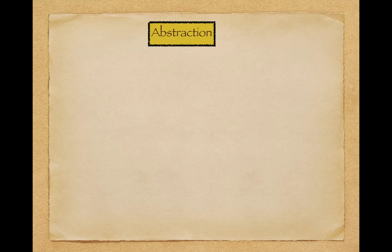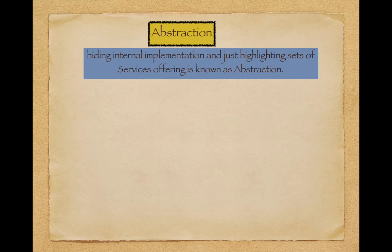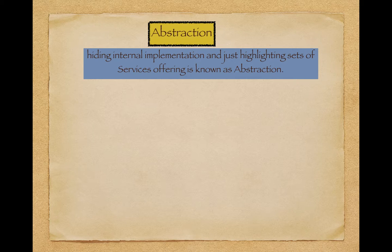So abstraction is basically where we hide the implementation and operational part and just offer some sets of services. The definition of abstraction is: hiding internal implementation and just highlighting the sets of services being offered. In abstraction we hide the internal implementation and operations from the outer world and just show the sets of services we are offering.